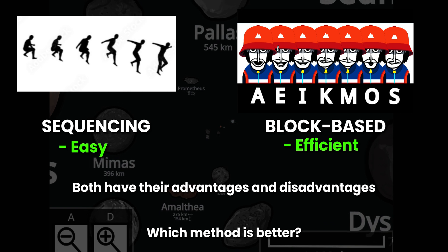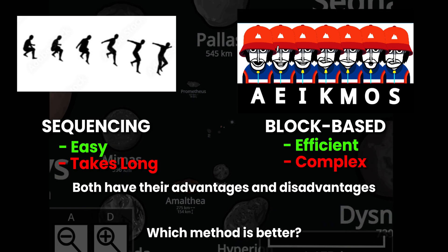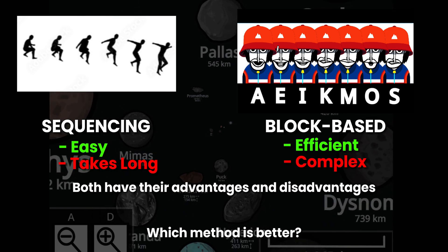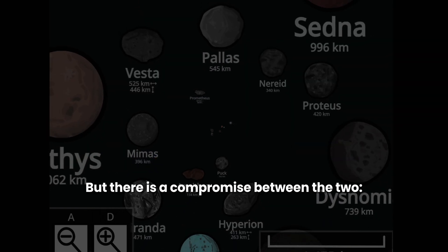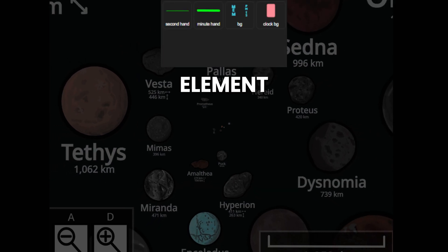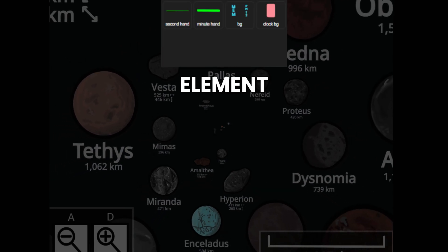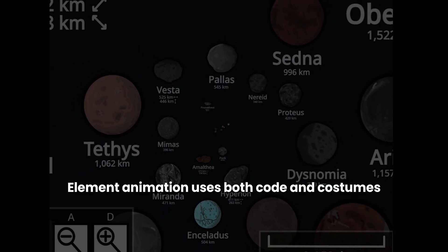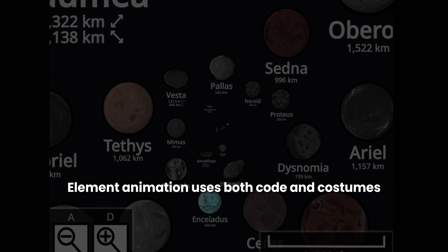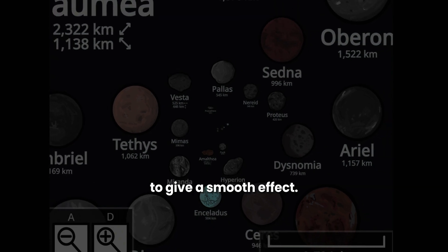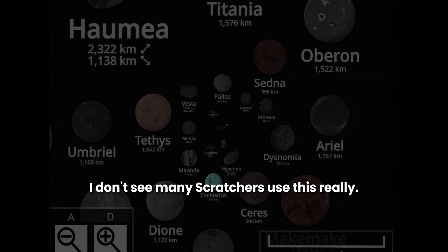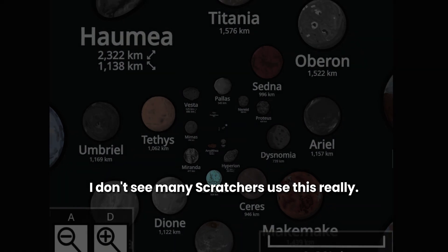Well, both have their advantages and disadvantages and suit different types of animators. But there is a compromise between the two: element animation. Element animation uses both code and costumes to give a smooth effect, which makes it one of the best ways to animate. I don't see many Scratchers use this.